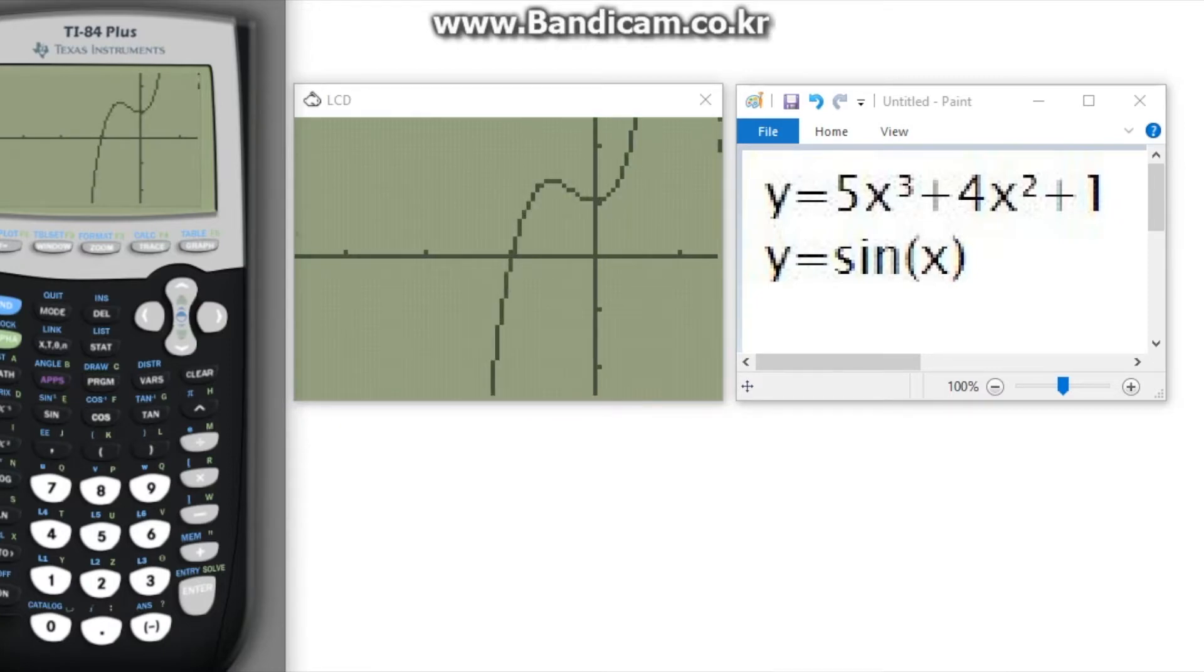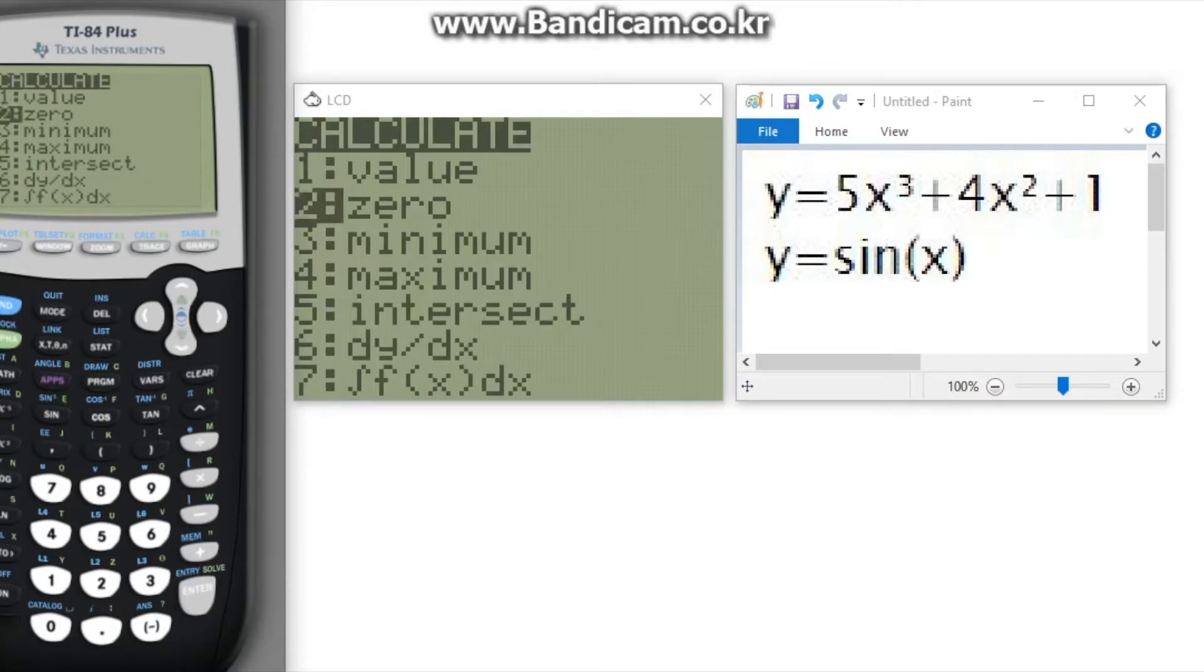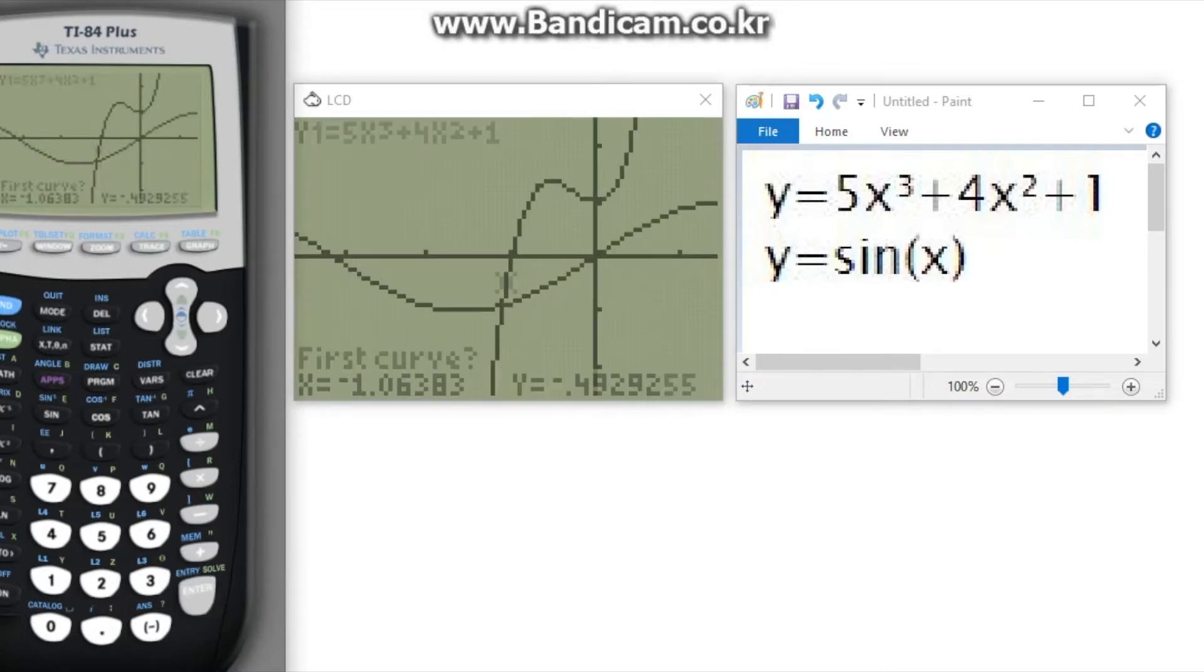After zooming in, we can see that the intersection point is much more visible and from here we can simply use the same method from the first example to find the intersection point. Again, go to 2nd calc, press 5 for intersect and locate the first and second curve near the intersection point.